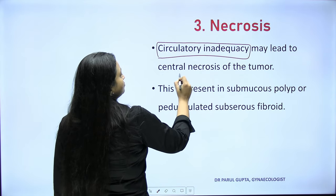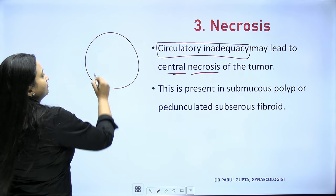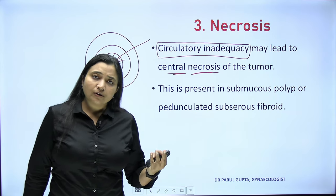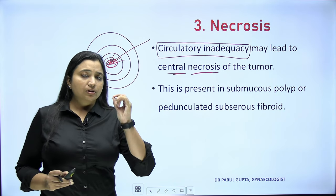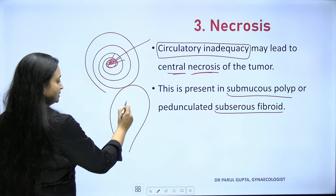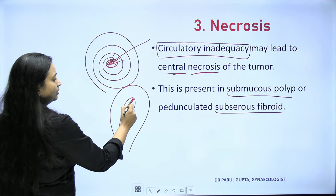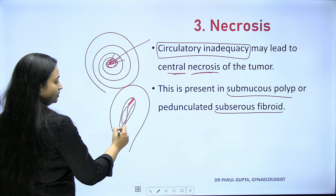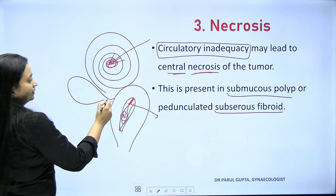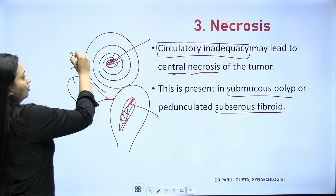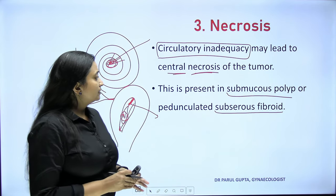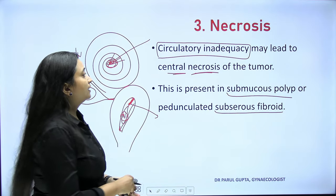Necrosis: circulatory inadequacy may lead to central necrosis, since the central part has the least blood supply. When it is a pedunculated tumor with a small pedicle but a large fibroid, blood supply is not adequate. A submucous polyp or a subserous fibroid with a very thin pedicle — the polyp may come down towards the os and undergo necrosis due to less blood supply, or similarly a subserous fibroid with a thin pedicle can undergo necrosis. So necrosis occurs after menopause, with a pedunculated subserous fibroid, or a submucous polyp.